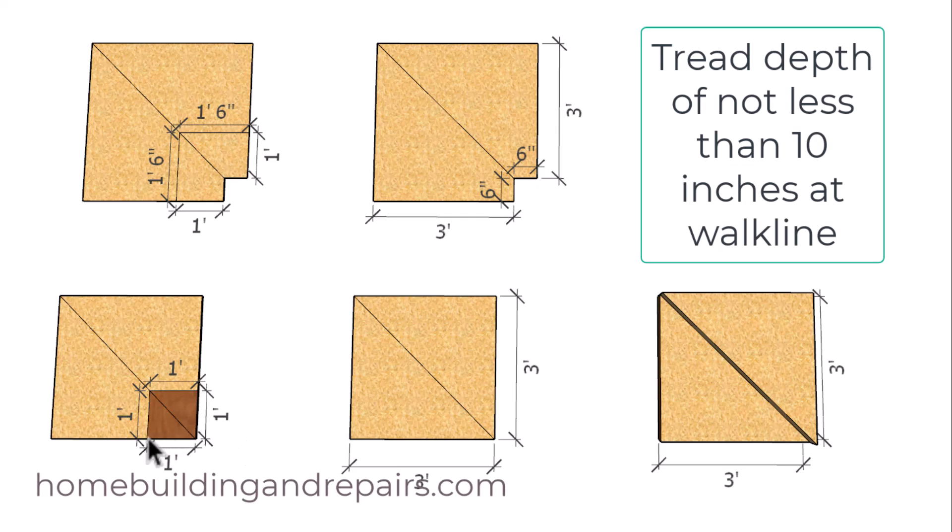Next up, let's talk about the walk line. The walk line on a winder is usually going to come in 12 inches. So that would come in 12 inches from the smallest side of the stairway, and this distance here needs to meet the minimum requirement for your stair tread depth.